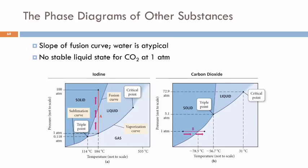When we look at iodine and carbon dioxide, their fusion curves have positive slope. That's more normal. For water, that negative slope is atypical. That's not common for compounds.